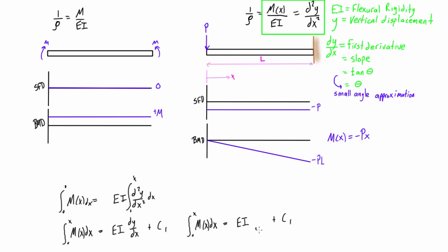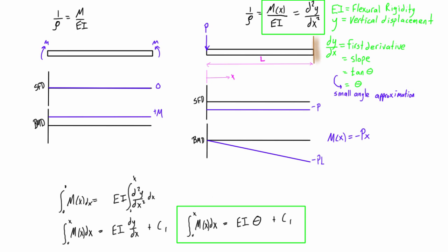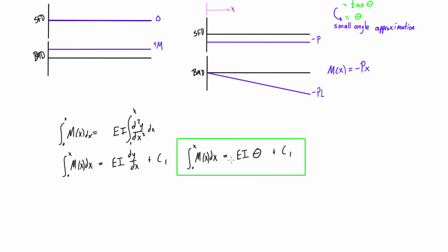So we can write dy/dx as theta. This expression becomes super important because we're going to use boundary conditions to figure out what the constant is, and then the rest will just be in terms of x. The next thing we want to do is keep integrating — integrate this again once more. That is a super important expression, so let's note it and proceed to the second integration.